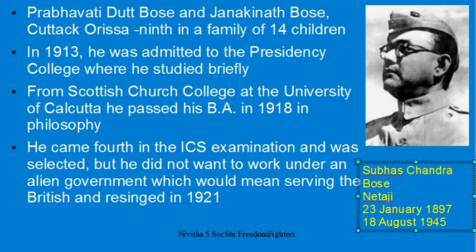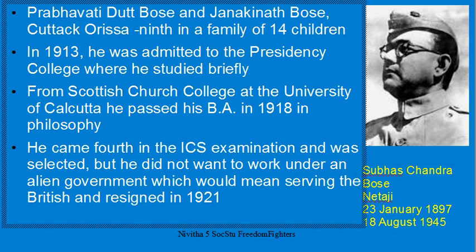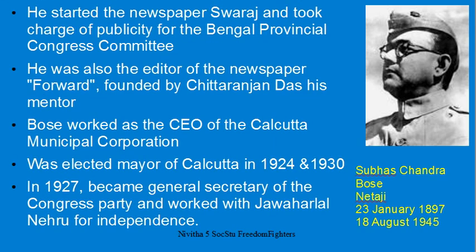Though selected for ICS, Netaji resigned in 1921, not wanting to be a slave of the British. He started a newspaper called Swaraj and was responsible for the Bengal Provincial Congress Committee. When the Indian National Congress had a meeting in Bengal, he arranged it in a way that everyone appreciated his organizational skills. He was also editor of a newspaper called Forward, funded by his mentor Chittaranjan Das.